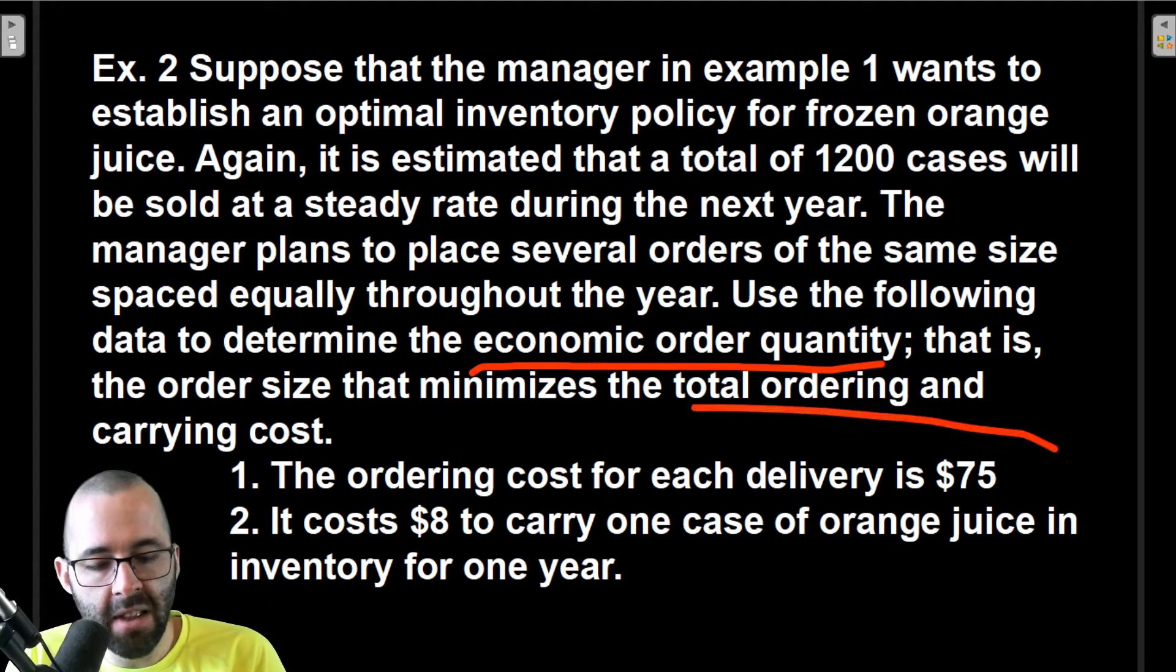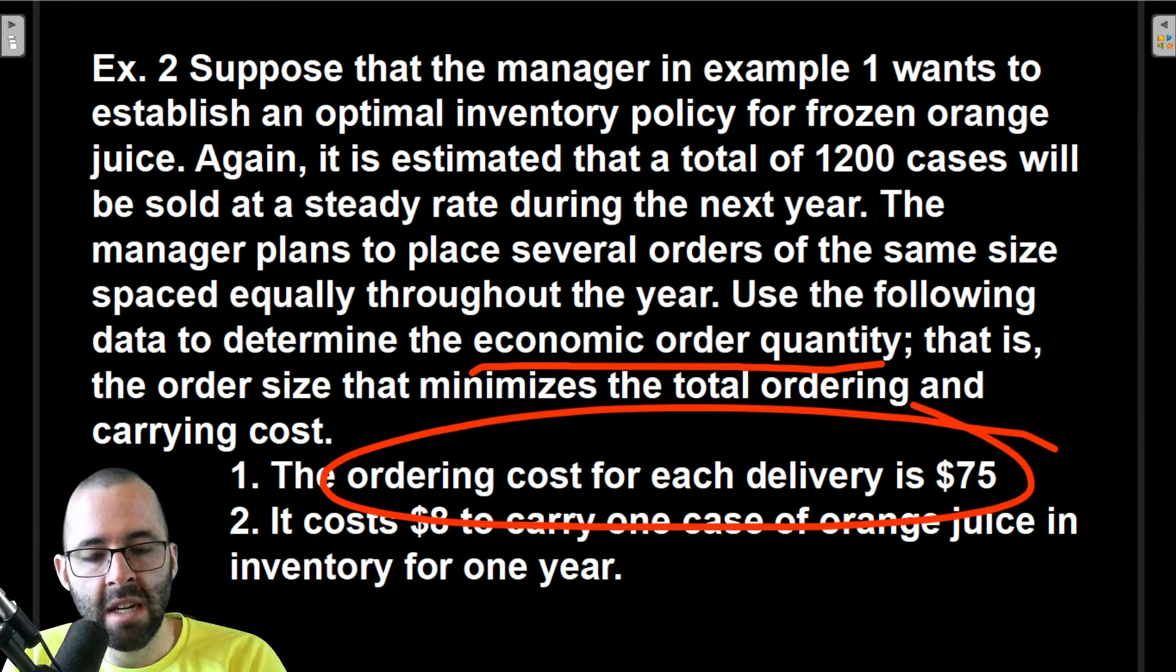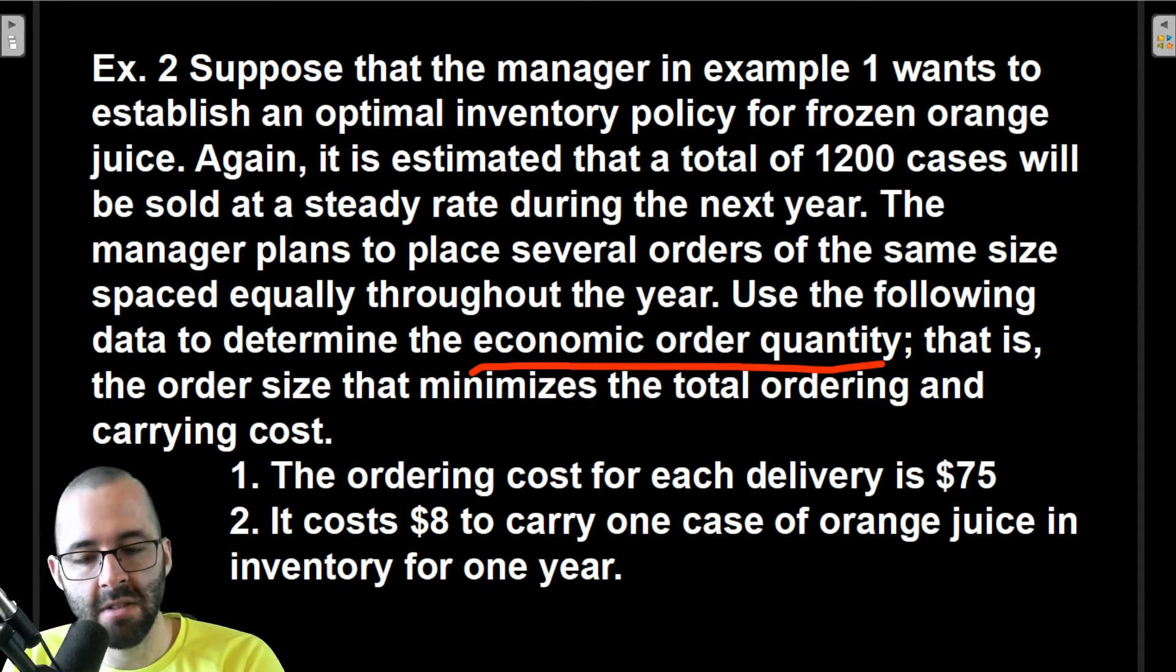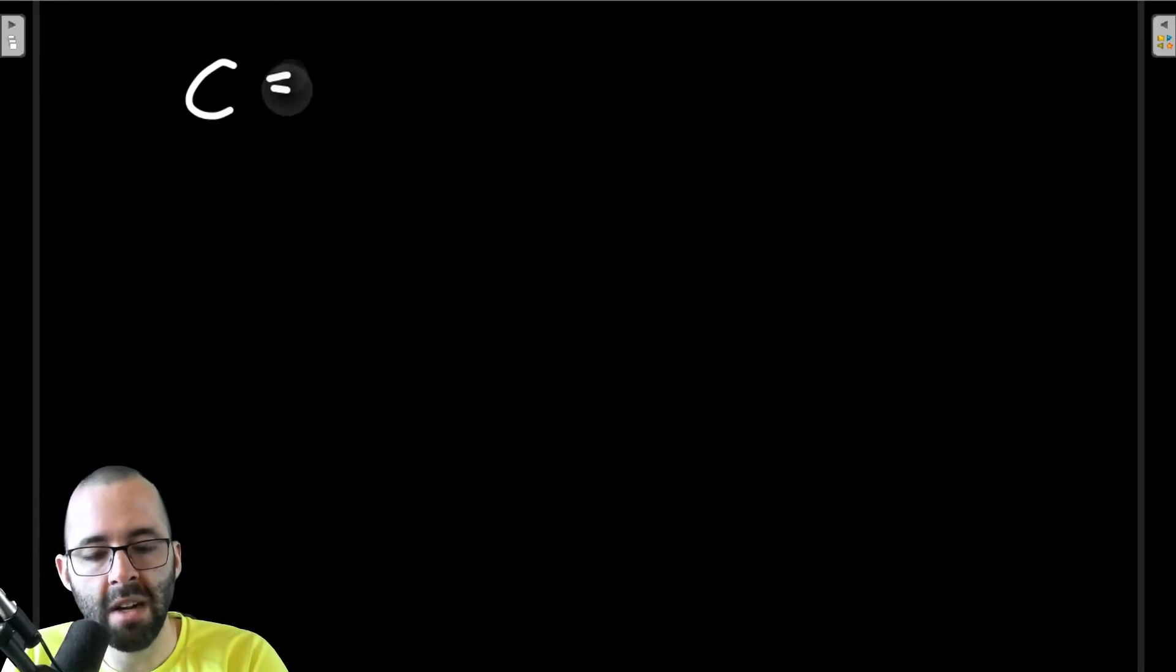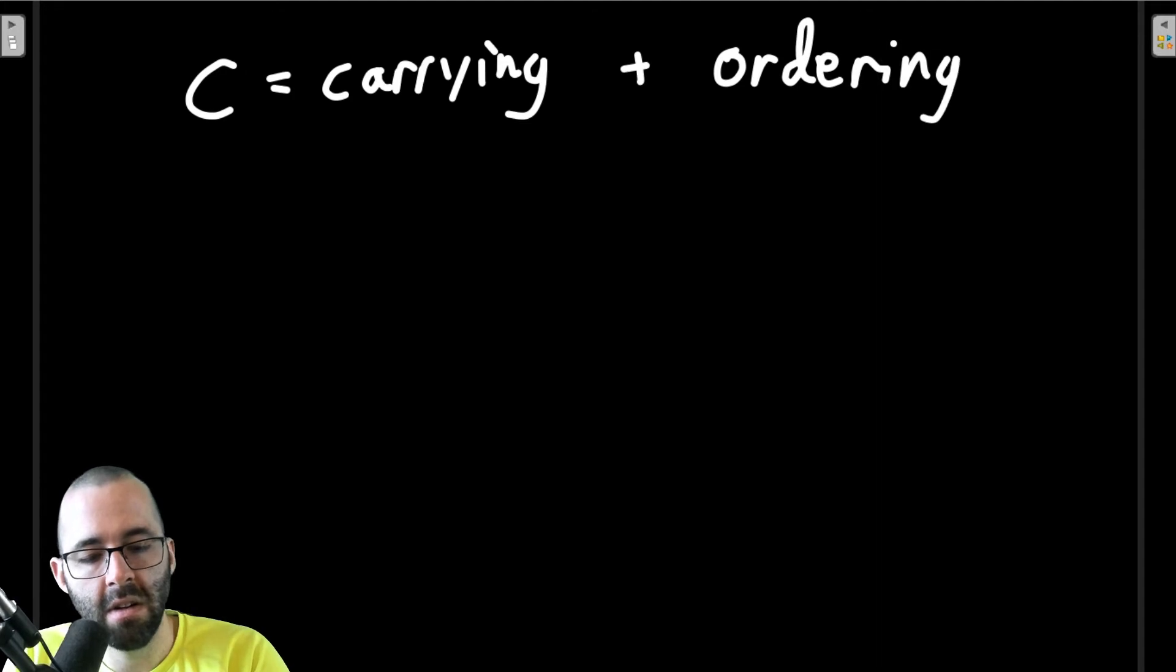In the previous example all we did was carrying costs, but now we're also going to include ordering costs. Specifically, the ordering cost for each delivery is $75. So our total cost is carrying cost plus ordering cost. And again we're going to say if we order x times.